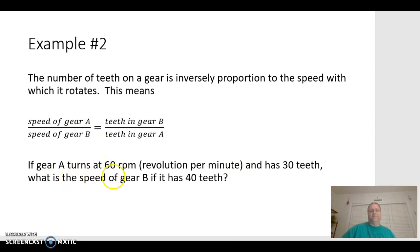So, the question is, if gear A turns at 60 revolutions per minute and has 30 teeth, what is the speed of gear B if it has 40 teeth? So, go ahead and try to set this up and solve it. It's really helpful to think about what kind of number you're expecting before you do it. Remember, since this is an inverse proportion, and we know that gear B has more teeth than gear A, then we should expect that the RPMs are going to be reduced by some amount.